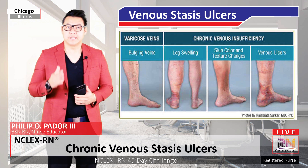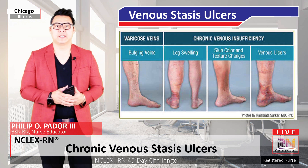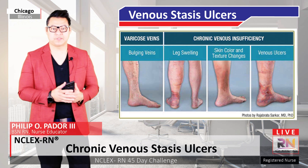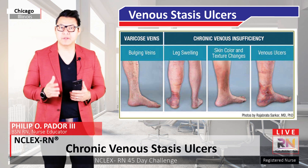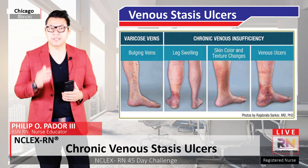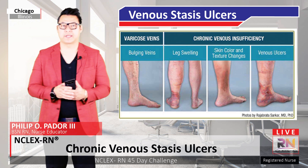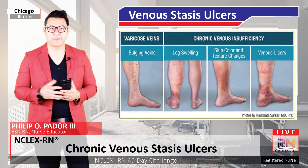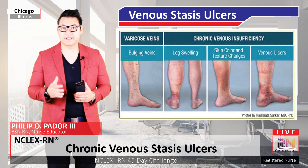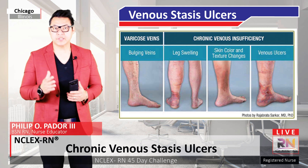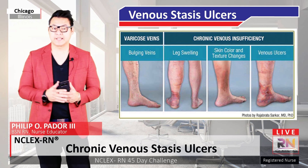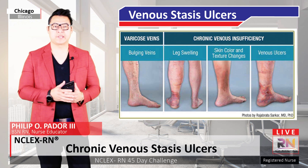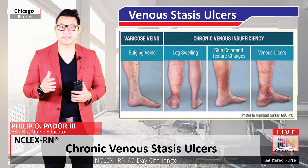In addition, the increase in pressure stretches the vein walls, allowing proteins in the blood and blood cells to leach into the subcutaneous tissue, resulting in edema and the eventual breakdown of the soft tissues due to the lack of oxygen and nutrients. Specifically, deposits around the capillaries of the protein fibrin, which normally plays a role in clotting, prevent oxygen and nutrients from flowing to the surrounding muscles and tissues, and in turn leads to necrosis and ulceration. This is known as the fibrin cuff theory.